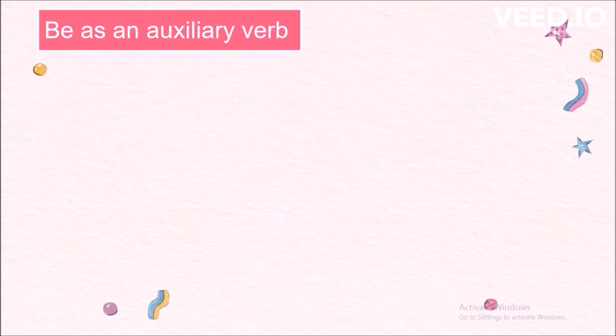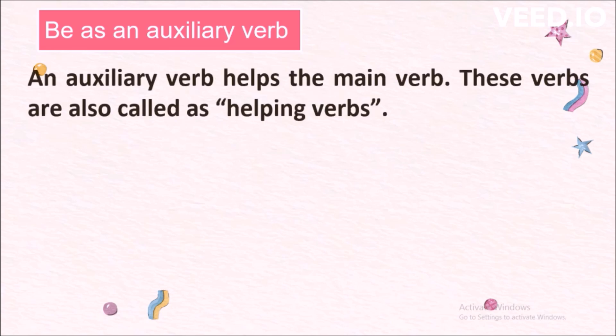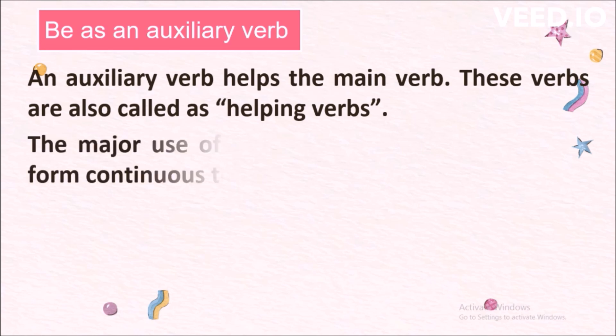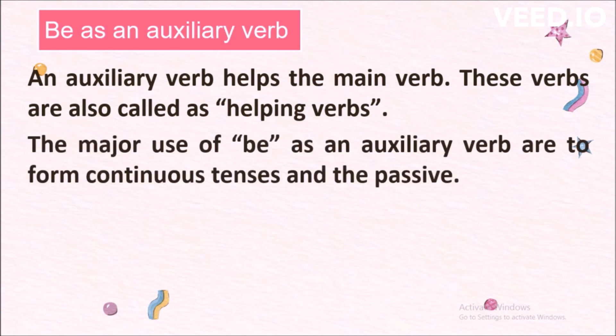Now let's see how we can form yes/no questions when be plays the role of an auxiliary verb. An auxiliary verb helps the main verb — these verbs are also called helping verbs. The major uses of be as an auxiliary verb are to form continuous tenses and the passive.